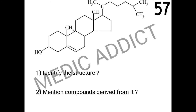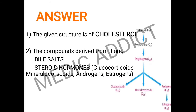In the next spot, based on the image, we have to identify the structure and mention the compounds derived from it. This is a very important spot with 90–95% chances of being asked in the exam. The given structure is the cholesterol molecule. Compounds derived from it include bile salts and a variety of steroid hormones such as glucocorticoids, mineralocorticoids, androgens, and estrogens. The figure shows cholesterol converted to pregnenolone, then to progestogens, and subsequently to the steroid hormones.